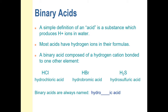Since acids produce hydrogen ions, you might expect that their chemical formulas would have hydrogen in the formula. And 98% of the time, the hydrogen is at the beginning of the formula. Usually, but not always, hydrogen is at the start of the formula as a clue that it's an acid.